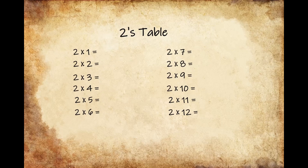Looking at the twos table, 2 times 1 is 2, 2 times 2 is 4, 2 times 3 is 6, 2 times 4 is 8, 2 times 5 is 10, 2 times 6 is 12,